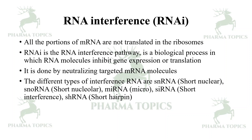The different types of interference RNAs are short nuclear RNA, micro RNA (miRNA), short interference RNA (siRNA), and short hairpin RNA. Among these, the most important are miRNA and siRNA, which we will discuss in detail.